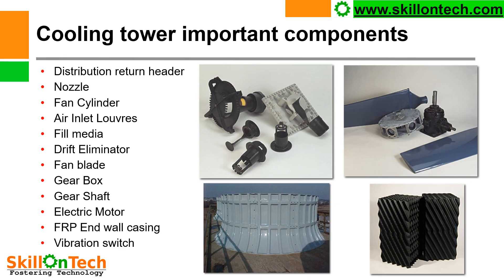Here you can see some important components of a cooling tower. Distribution return header nozzles are installed on the distribution header. This is a nozzle assembly. Fan cylinder, fan blades, fan hub, and reduction gearbox are also shown. These are PVC fills, drift eliminator, gear shaft, electric motor, FRP end wall casing, and vibration switches, which are also installed on the motor or gearbox.